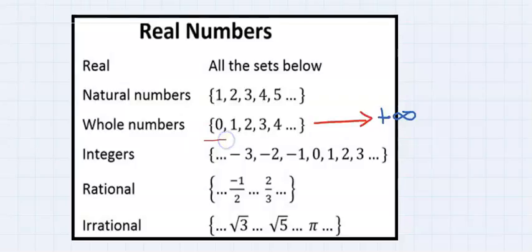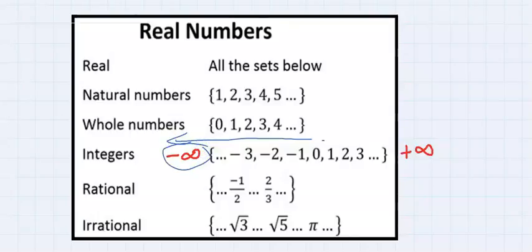When you include zero going towards infinity, it is known as whole numbers. When you consider all the numbers going towards negative infinity and also towards positive infinity, it is known as integers.